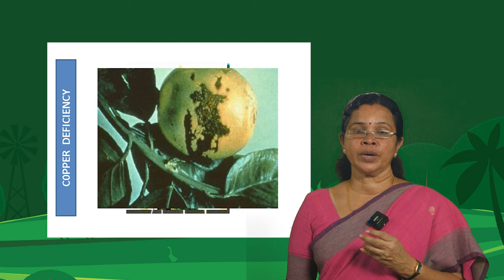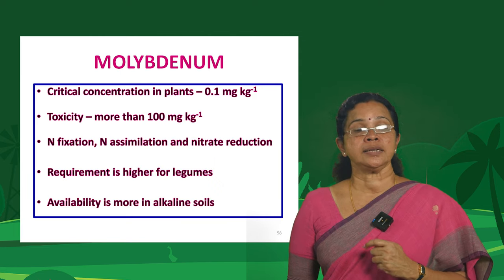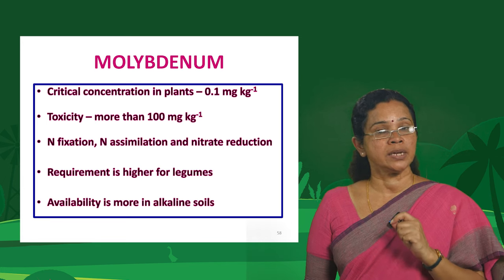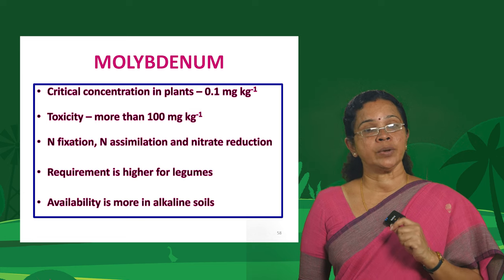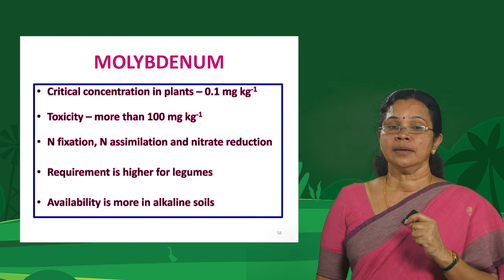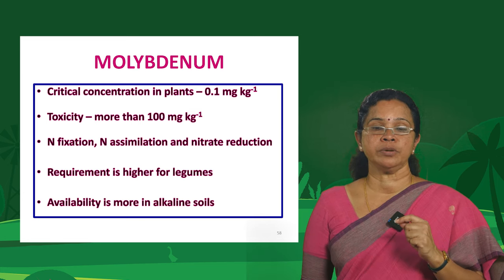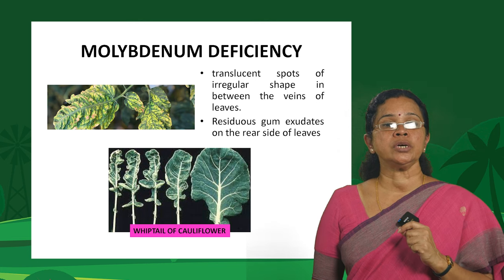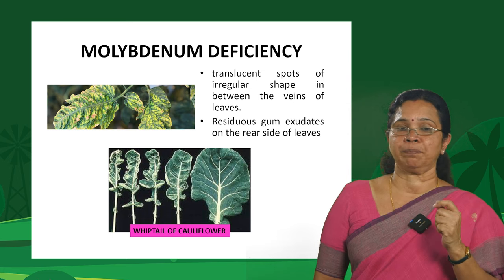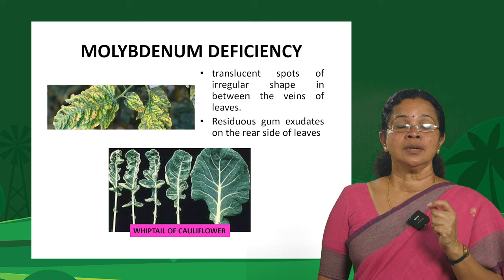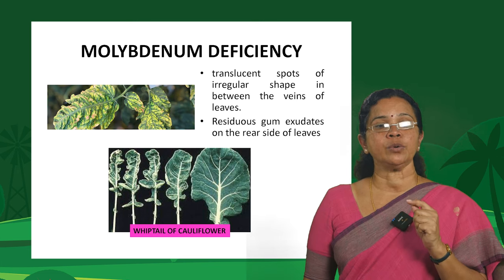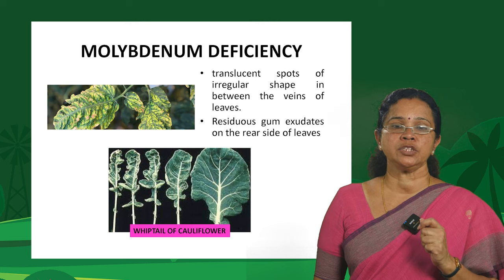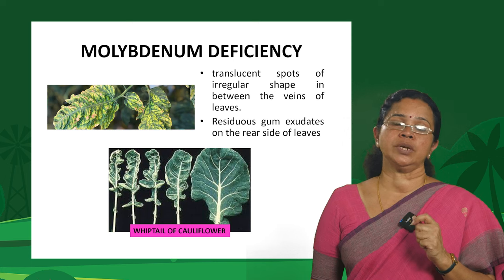Coming to molybdenum — required in very very small quantities. It has a role in nitrogen fixation, nitrogen assimilation and nitrate reduction — making it crucial in nitrogen metabolism in plants. Requirement is higher in legumes. In contrast to other micronutrients, the availability of molybdenum is always higher in alkaline soils. A nutritional disorder known as the whip tail of cauliflower is due to molybdenum deficiency — the leaf progressively becomes very narrow and turns into something like a whip. Translucent spots of irregular shape appear between leaf veins, and a residuous gum exudate appears on the underside of the leaf.